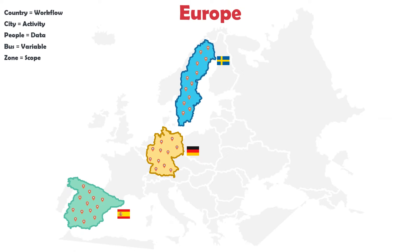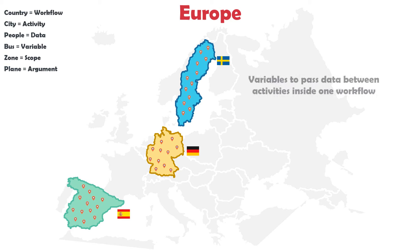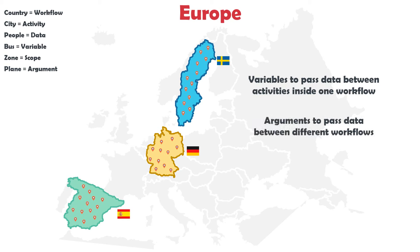Now assume we want to travel to another country, for example from Germany to Spain. Buses can only transport people inside one country, but for traveling between countries we need another transport — for example an airplane. Airplanes are the arguments, which pass the data from one workflow to another. In summary: variables are only for passing data within the same workflow, and arguments are for passing data between workflows.